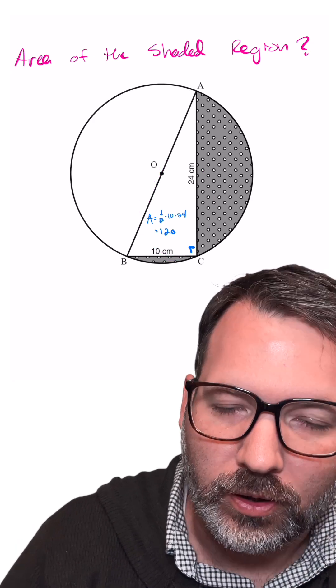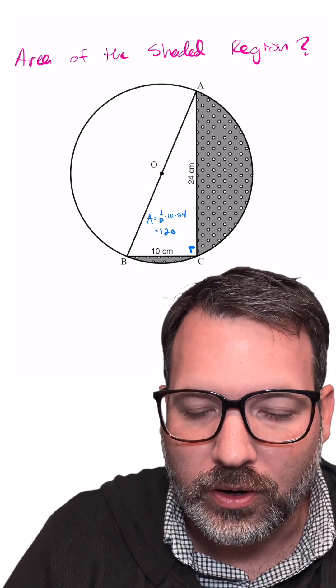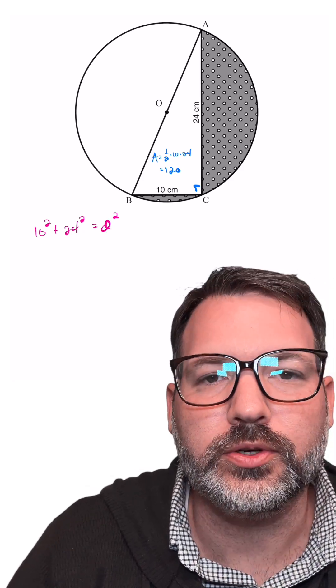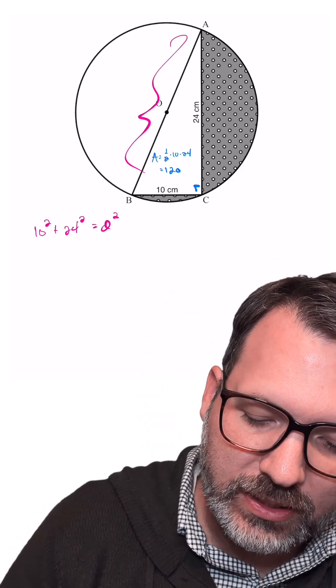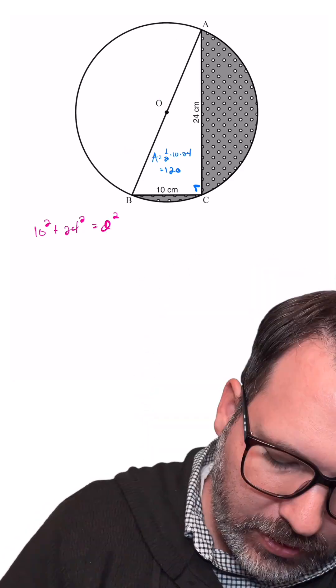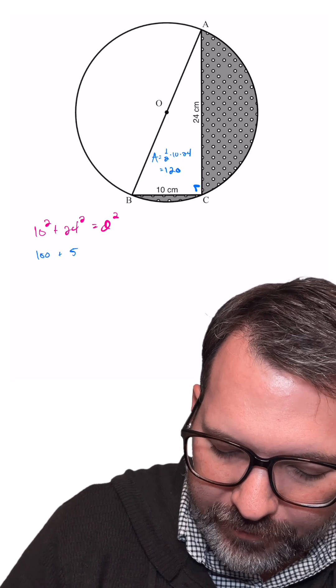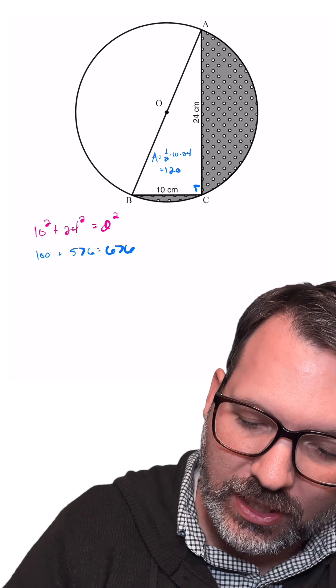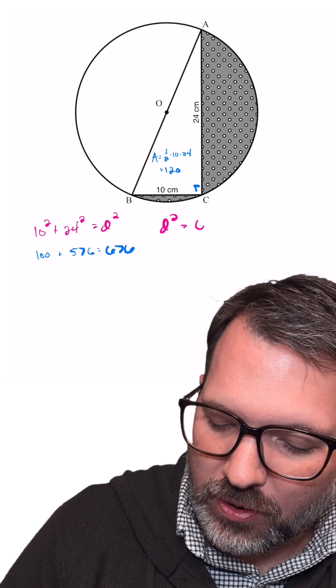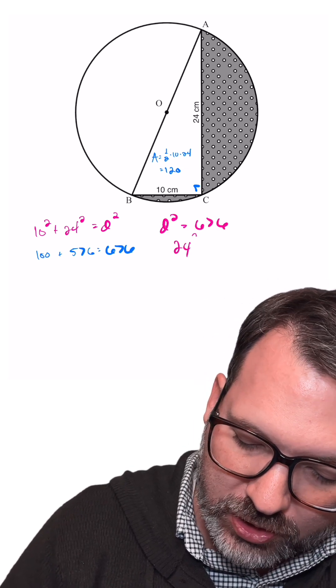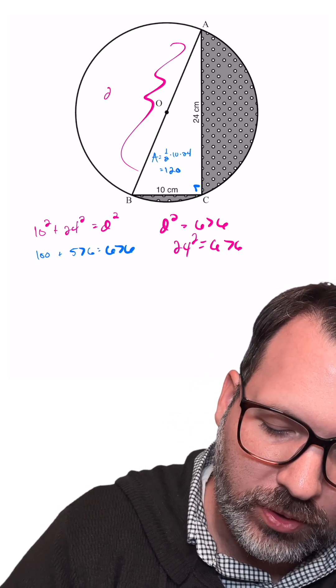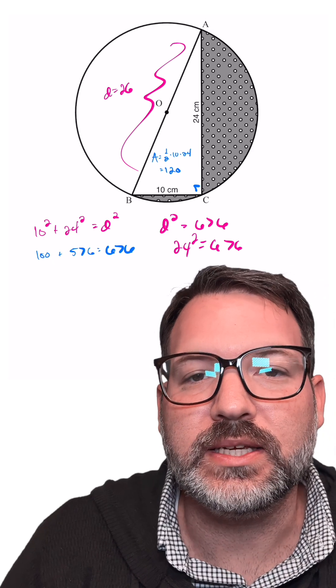Again, this is a right triangle. It has to obey Pythagorean theorem. 10 squared plus 24 squared needs to be equal to D squared, where D is the diameter of that circle. 10 squared is 100, 24 squared is 576, and that adds up to make 676. It just so happens that 26 squared is equal to 676, and so we can say for sure that that diameter is 26.